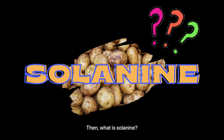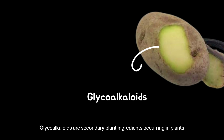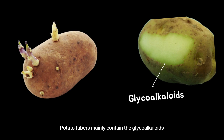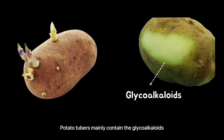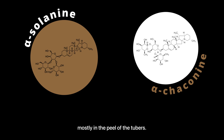It protects them from insects and bacteria, but it is toxic to humans. Greening in potatoes is a good indicator of solanine. Solanine is a glycoalkaloid found in potatoes. Glycoalkaloids are secondary plant ingredients occurring in plants of the nightshade family, as a defense mechanism against pests and germs. Potato tubers mainly contain the glycoalkaloids alpha-solanine and alpha-chaconine, mostly in the peel of the tubers.